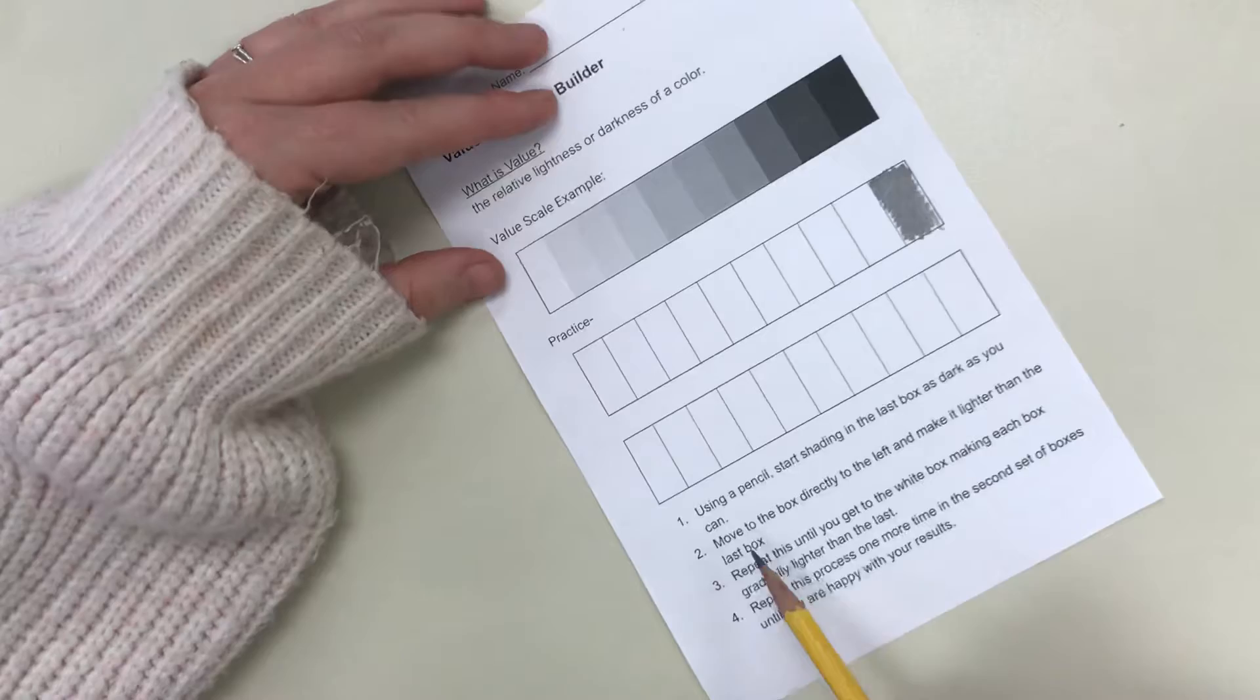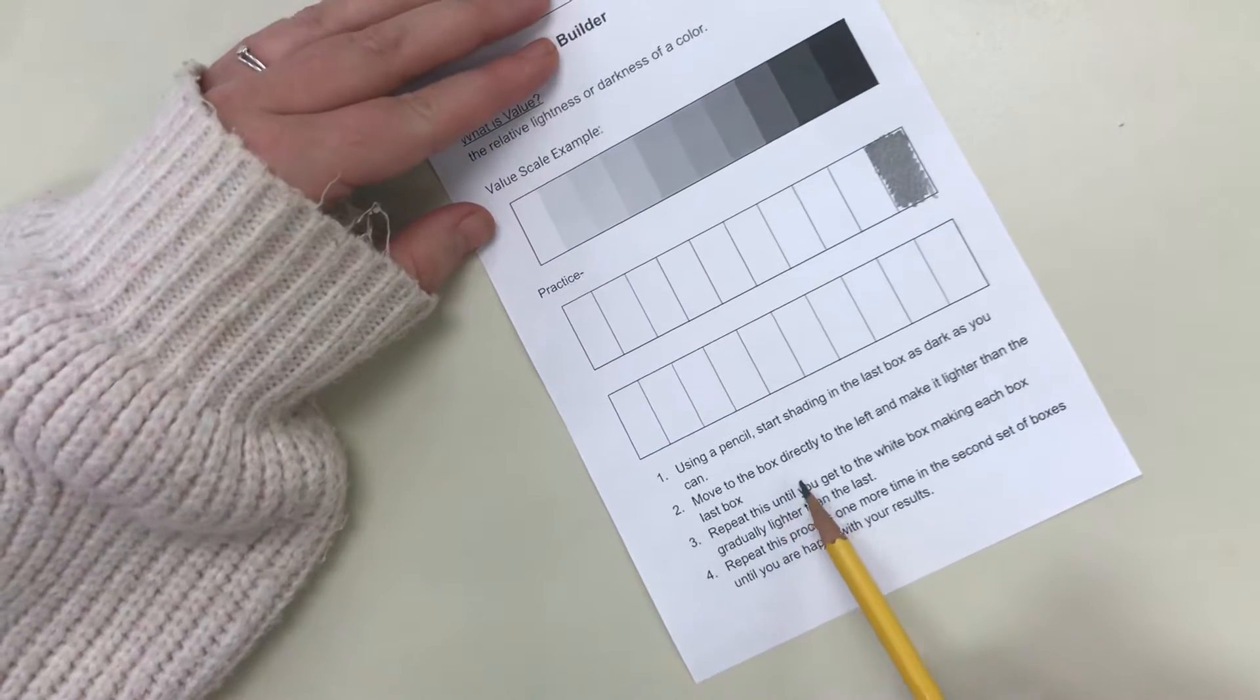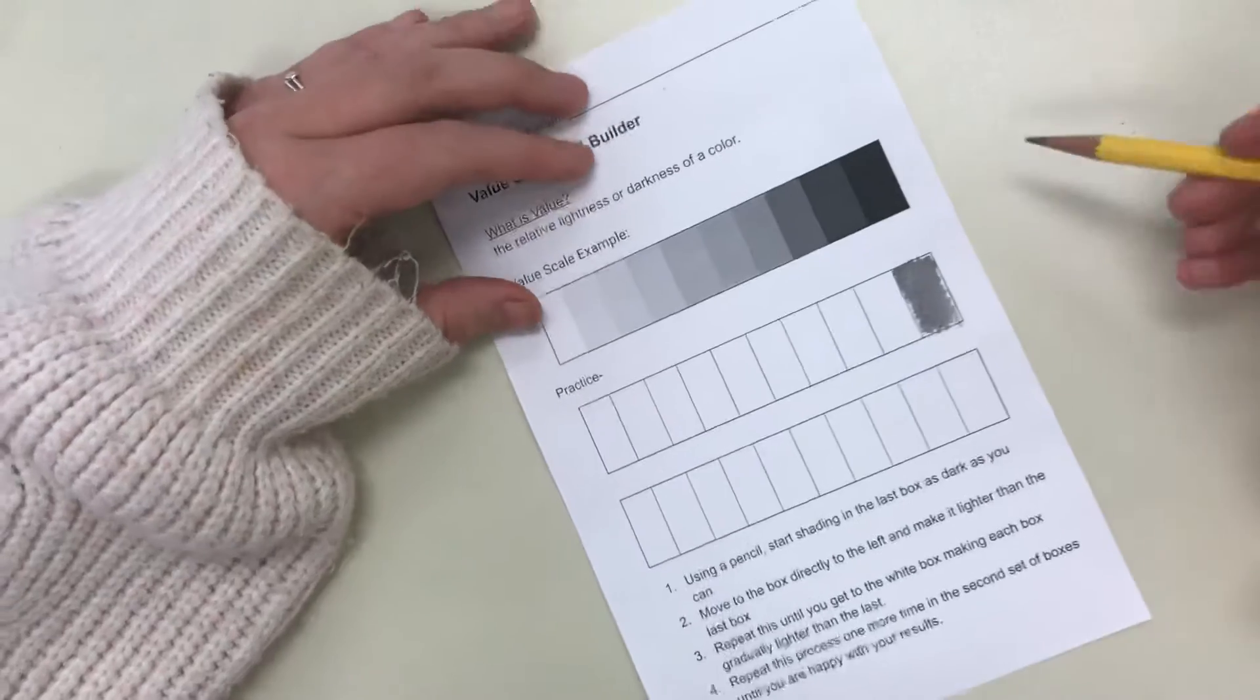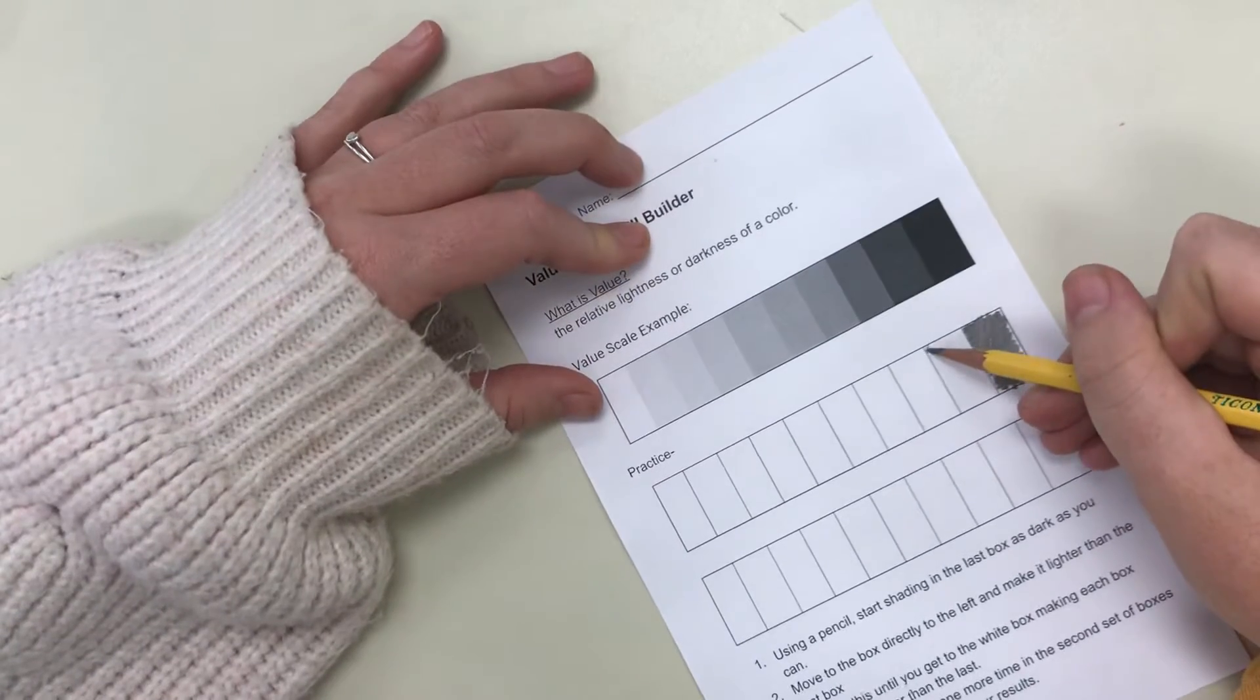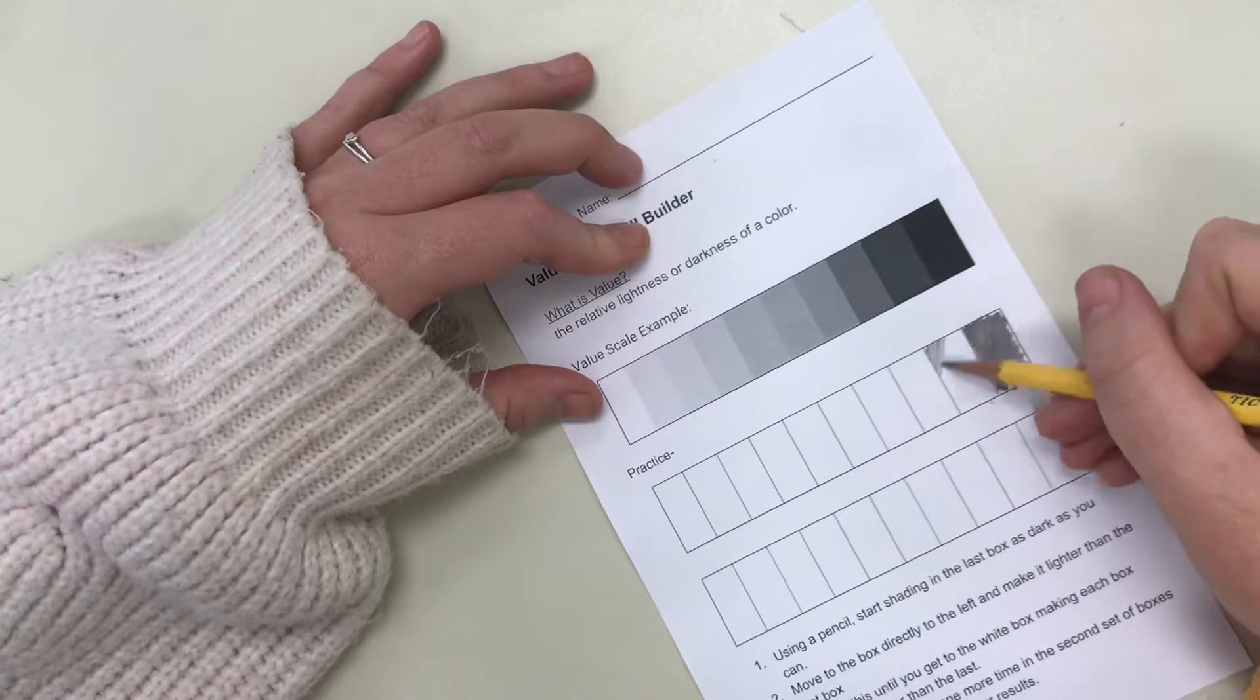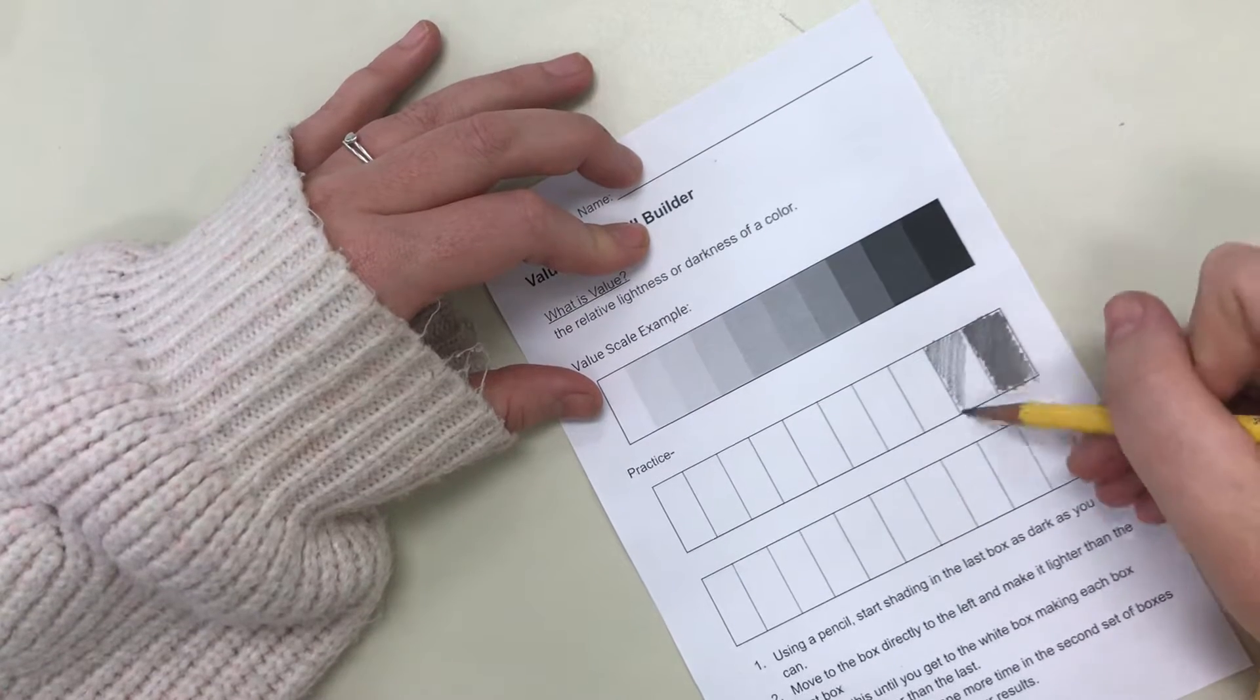After that the directions say to move the box directly to the left and make it lighter than the last box. So now that I have my darkest box I'm going to come over to the next box and go slightly lighter than that box.